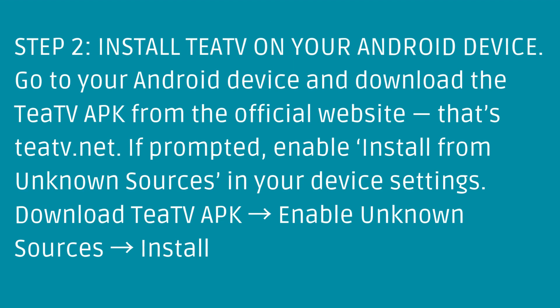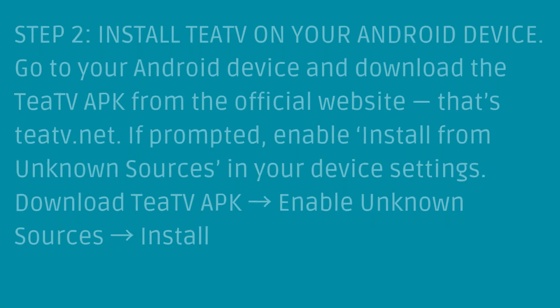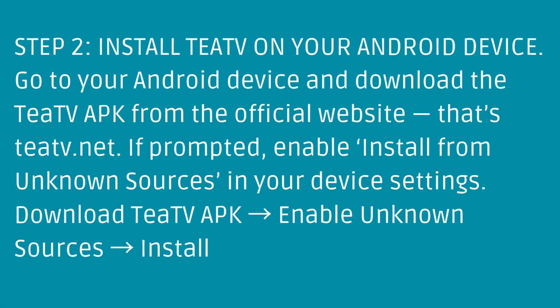Step 2: Install TTV on your Android device. Go to your Android device and download the TTV APK from the official website. If prompted, enable 'Install from unknown sources' in your device settings. Download the TTV APK and enable unknown sources install.